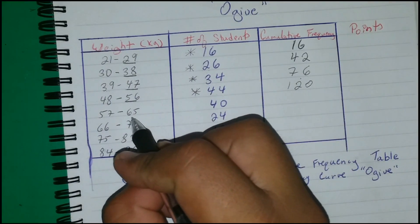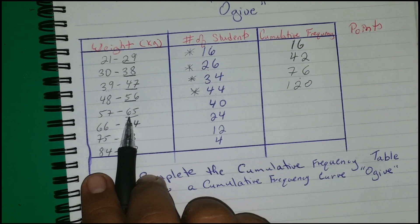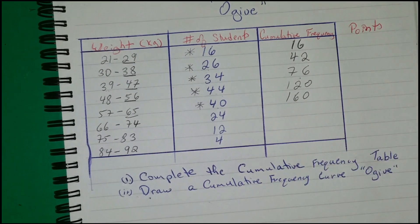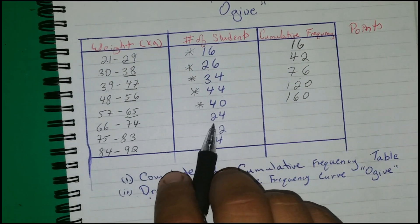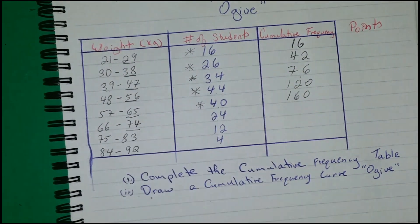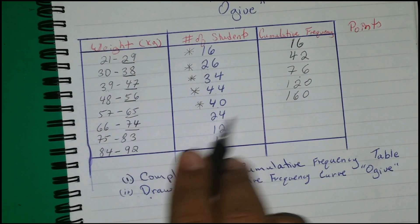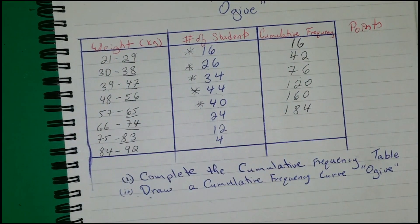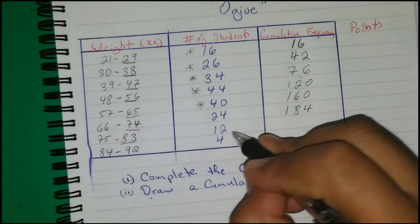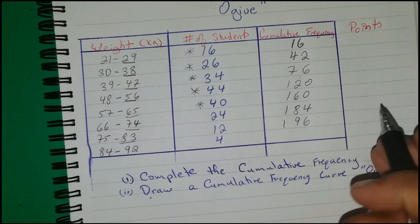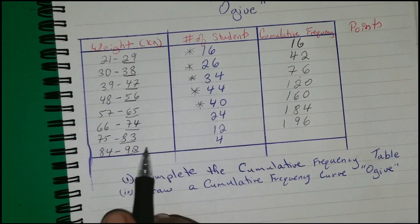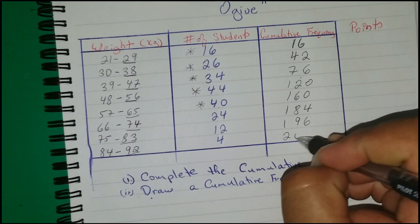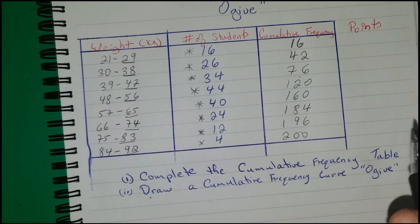How many students have a weight less than 65 kilograms? That is 40 more added to 120, giving 160 students. For 74 kilograms or less, add 24 more to get 184. For 83 kilograms or less, add 12 more to get 196. And for 92 kilograms or less, add 4 more to get 200 students total.